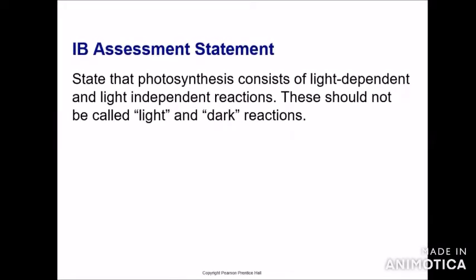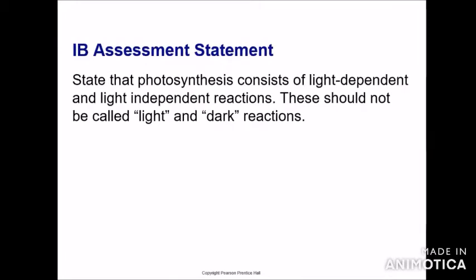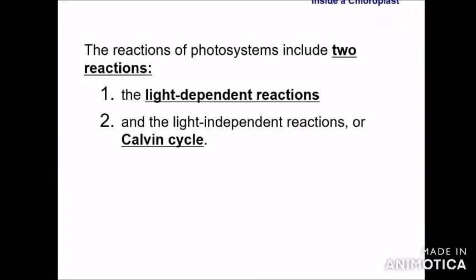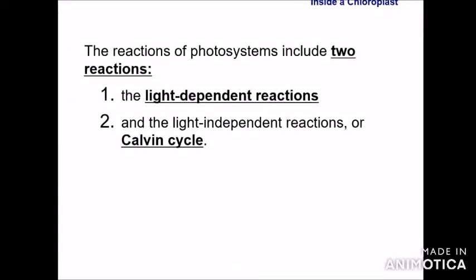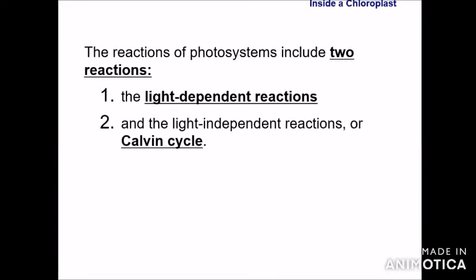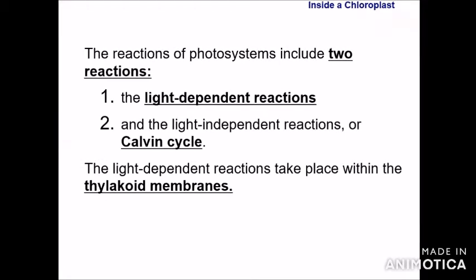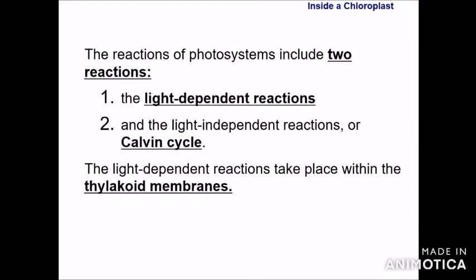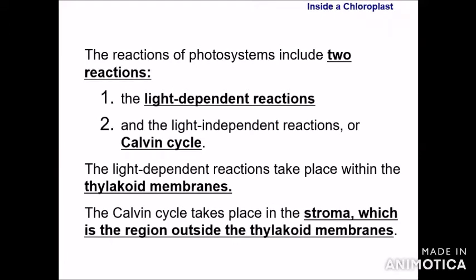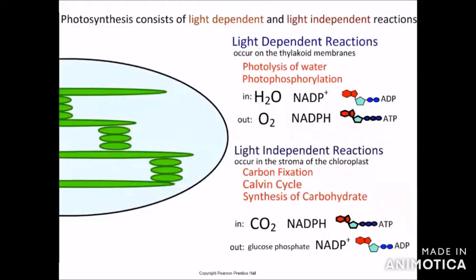The next assessment statement states that photosynthesis consists of light-dependent and light-independent reactions — this should not be called light and dark reactions. The reactions of the photosystems include two reactions: the light-dependent reactions and the light-independent reactions, or Calvin cycle. Light-dependent reactions take place within the thylakoid membranes, and the Calvin cycle takes place inside the stroma, outside the thylakoid membrane.